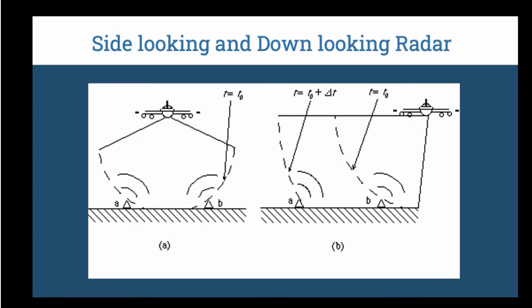In imaging radar, radar is side looking because if it is down looking, as you can see on the left of this picture, you won't be able to tell the difference between point A and point B.